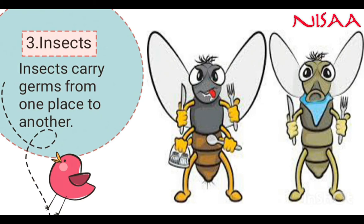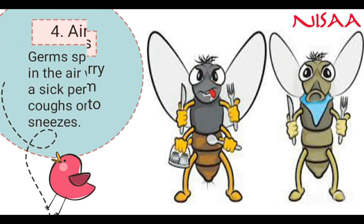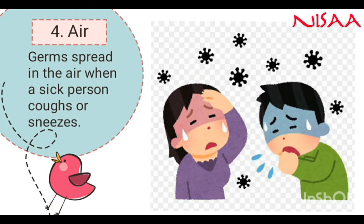Number 3: Insects. Mosquitoes, flies, cockroaches and other insects carry germs from one place to another and cause diseases like malaria, dengue, chikungunya, etc. Number 4: Air. When a sick person coughs or sneezes, the germs spread in the air and the disease is passed on to others present around them, causing diseases like cold, fever, flu, etc.